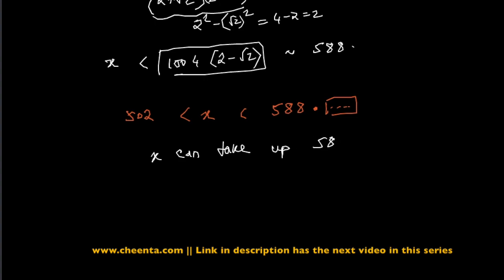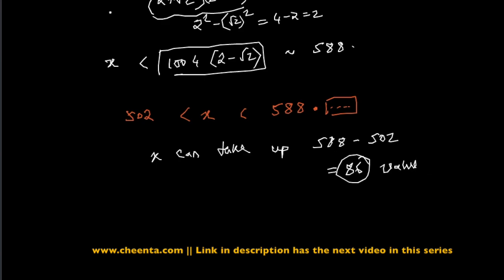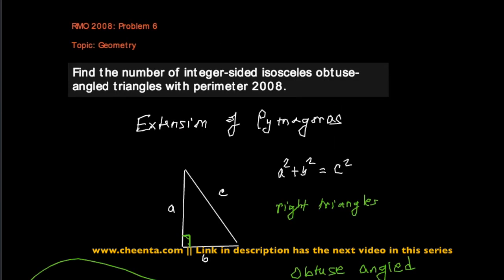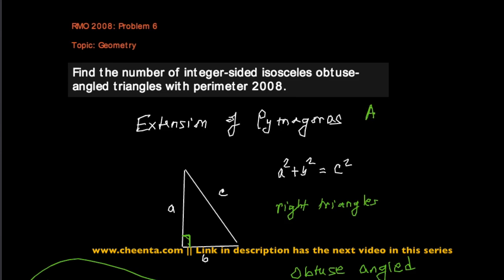That gives exactly 588 − 502 = 86 values. So there are exactly 86 integer-sided isosceles obtuse angle triangles with perimeter 2008. Look into the link in the description for more information on this problem, and thank you for watching — keep solving great problems!